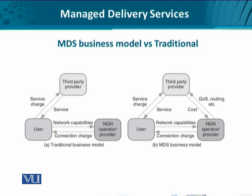In the MDS-based business model, there is a complete mesh in which the third party is also connected to the NGN operator. Since the third party now has an interface with the NGN operator, it can identify and demand certain QoS requirements to be met through allocation and subscription to certain network resources — for example, high bandwidth, optimal routing, shortest path routing, etc. This means the overall service nature that the third party was providing to the user is going to change.